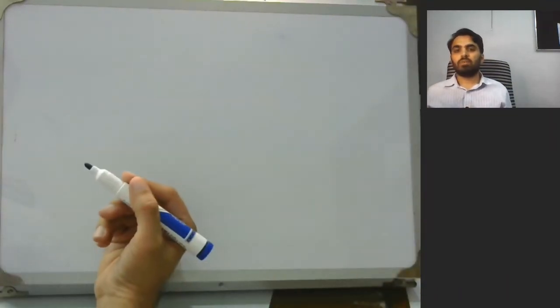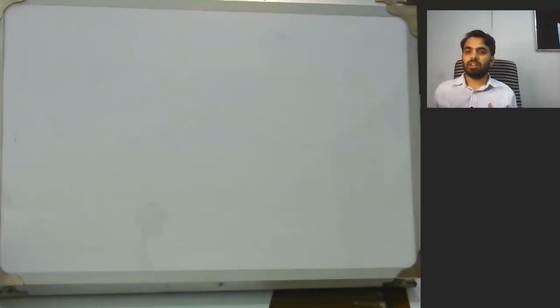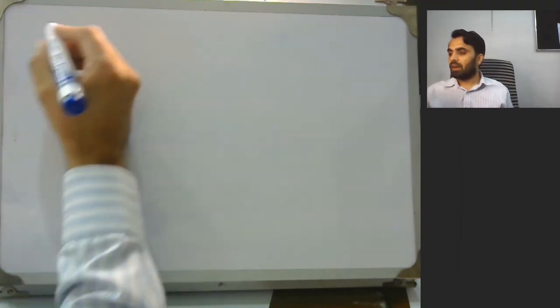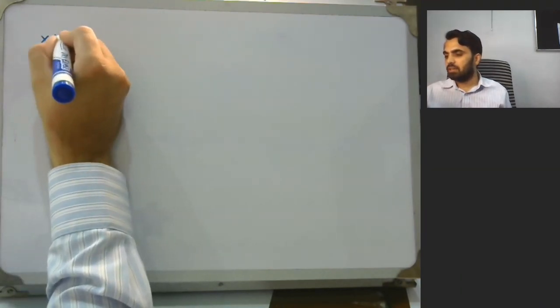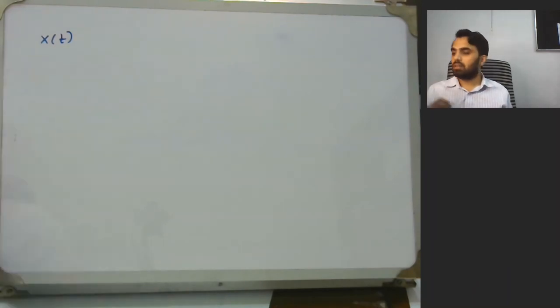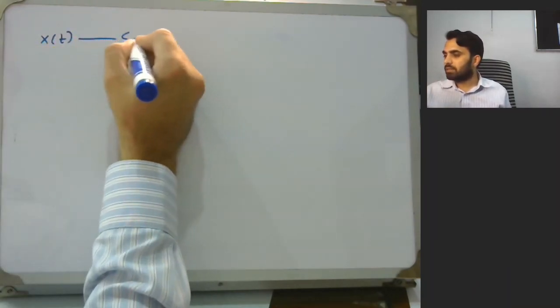Now analog to digital conversion is also a very fundamental area in signals and systems. For that, say we have a signal x of t, that could be any signal. This would pass through a sampling device.